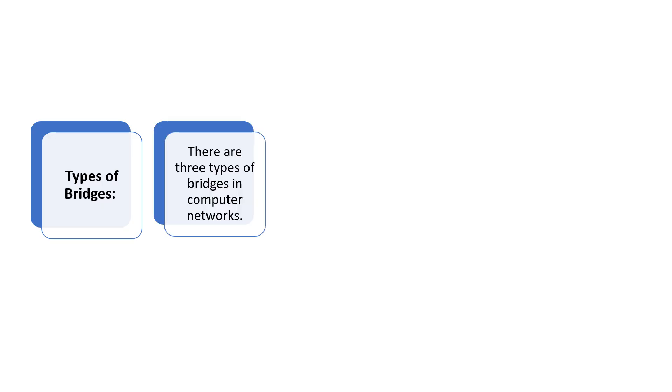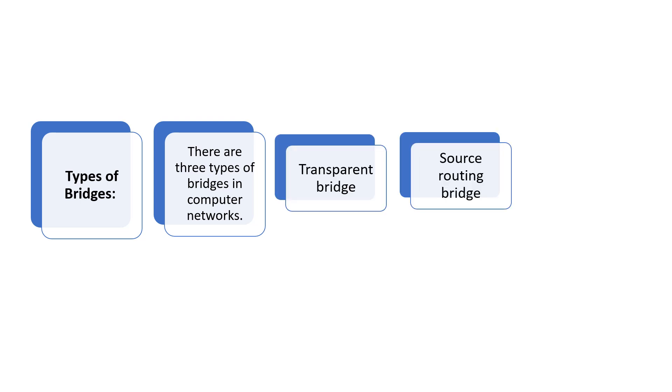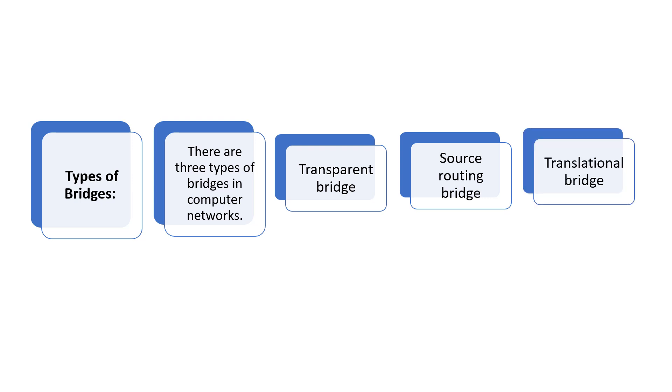Now we can move to the types of bridges. There are three types of bridges in networks: the first one is the transparent bridge, the second is the source routing bridge, and the third is the translational bridge.